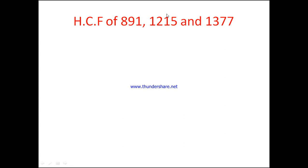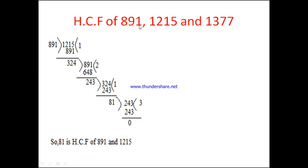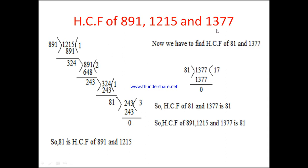To find the HCF of 3 numbers, first arrange them in ascending order. The question is already in ascending order. Take the first two numbers and find their HCF — here we find the HCF of 891 and 1215. Working through the steps, the last divisor gives us the HCF of 891 and 1215, which is 81.